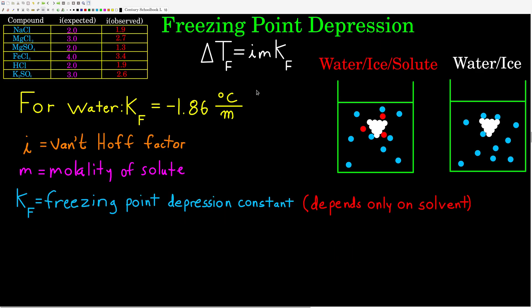The next colligative property is freezing point depression. Just as adding a solute to a solvent always increases the boiling point of the resulting solution relative to the pure solvent, adding a solute always decreases its freezing point — it always freezes at a lower temperature.